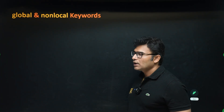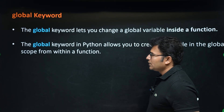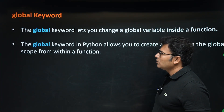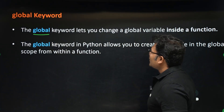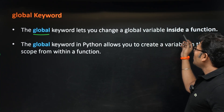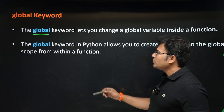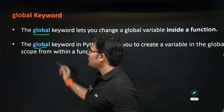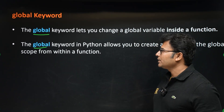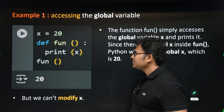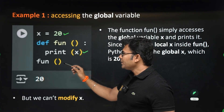The topic is global and non-local keywords. If you use the global keyword, you can change the value of a global variable inside a function. You can also make a variable a global variable even from within a function. For example, x = 20 is a global variable; inside a function you are accessing it and printing it.